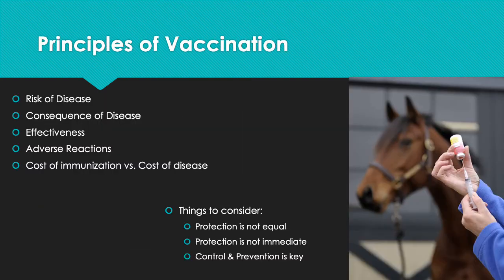To get started, let's talk about the principles of vaccination — why do we want to do this? We need to assess the risk of disease, consequences of disease, effectiveness, adverse reactions, and the cost of immunization versus the cost of the disease. When talking about risk of disease, are we in an area where this is endemic — meaning is it very common to get the disease they have vaccines for? The consequences of the disease: is it going to be fatal or just cause them to have a cold that you can treat with antibiotics? We want to take into consideration antibiotic resistance purposes as well.